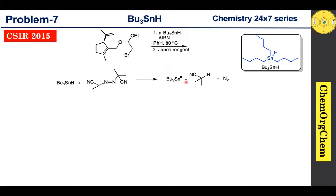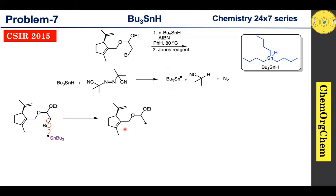This tributyltin radical is going to react with our substrate. The tributyltin radical quickly abstracts the bromine atom, resulting in homolytic cleavage of the carbon–bromine bond to produce the corresponding carbon-centered radical. Now this carbon-centered radical is going to react with the alkene.